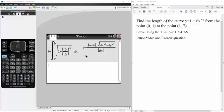Okay, in this question we want to find the length of the curve y equals 1 plus 6x raised to 3 halves from the point (0,1) to the point (1,7).